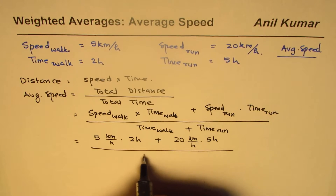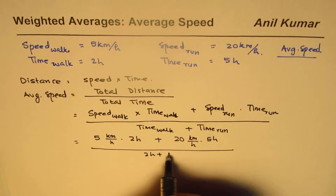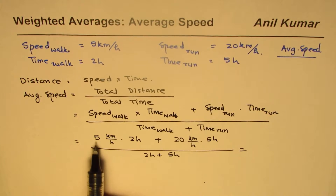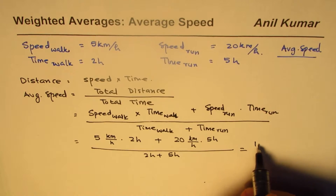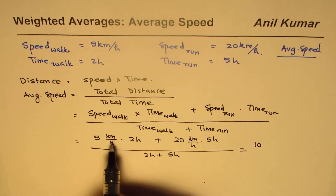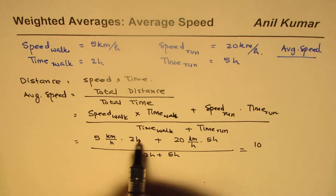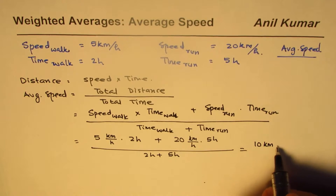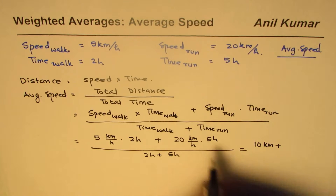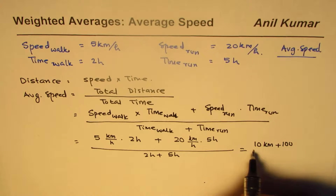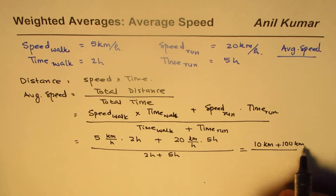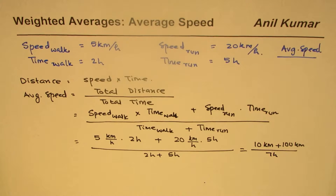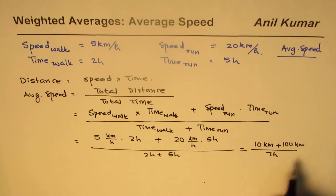Let's do the math: 5 times 2 is 10 — the hours cancel out and you're left with kilometers. Plus 20 times 5 is 100 kilometers, divided by total time of 7 hours.